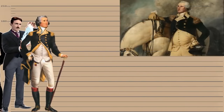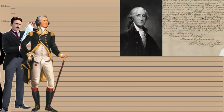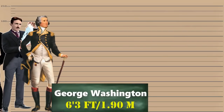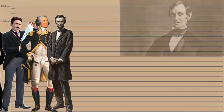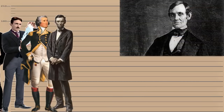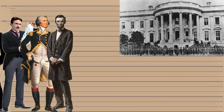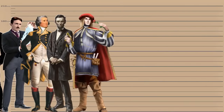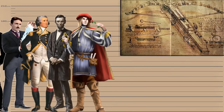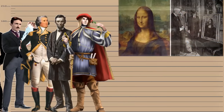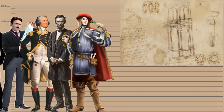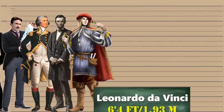Then we have the American political leader, military general, statesman and founding father who served as the first president of the United States — George Washington was known to be 6 feet 3 inches tall. And now we have the American statesman, politician and lawyer who served as the 16th president of the United States — Abraham Lincoln was as tall as 6 feet 4 inches. Followed by the Italian polymath of the Renaissance whose areas of interest included invention, drawing, painting, sculpting, architecture, science, music and many more — the multi-gifted Leonardo da Vinci was also 6 feet 4 inches.